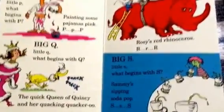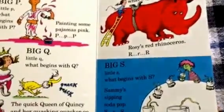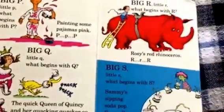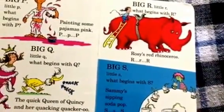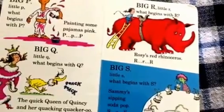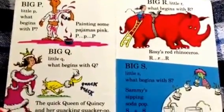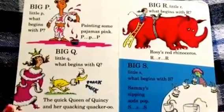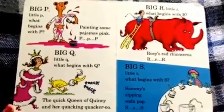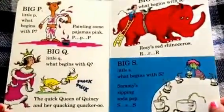Big R, little R, what begins with R? Rosie's red rhinoceros, R, R, R. Big S, little S, what begins with S? Sammy's sipping soda pop, S, S, S.